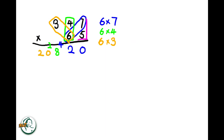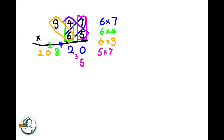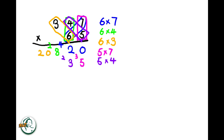Moving on to the other number, 5 multiplied by 7 is 35. We write down the 5 and carry over the 3. Next, we multiply 5 by 4, resulting in 20. Adding the carried over 3 to 20, we get 23. We write down the 3 and carry over the 2.